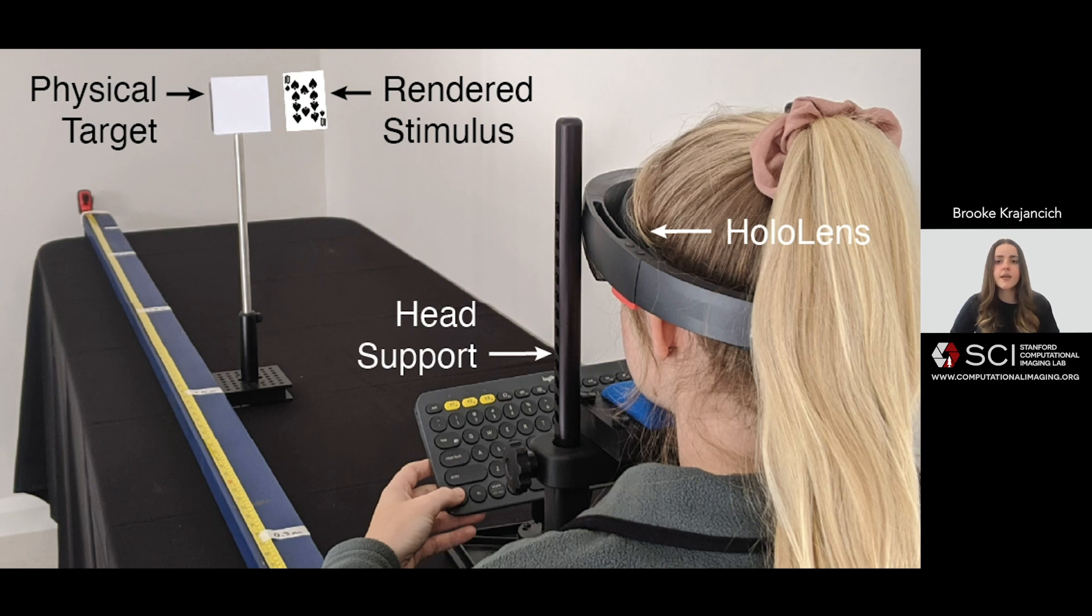So we explored this hypothesis using a Microsoft HoloLens AR headset. We rendered a flat surface textured with a playing card image at various distances. A physical target was placed at the same distance from the user, but with a small lateral displacement, just such that the virtual and physical objects would appear side by side, and a headrest was used to keep the subject's head fixed with respect to the physical target.